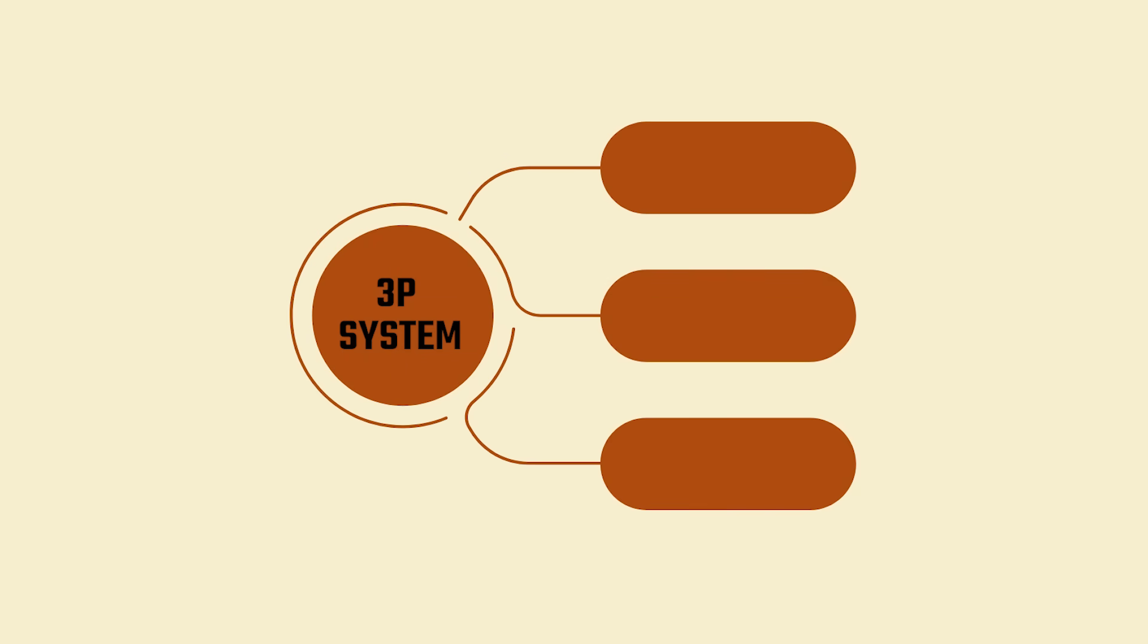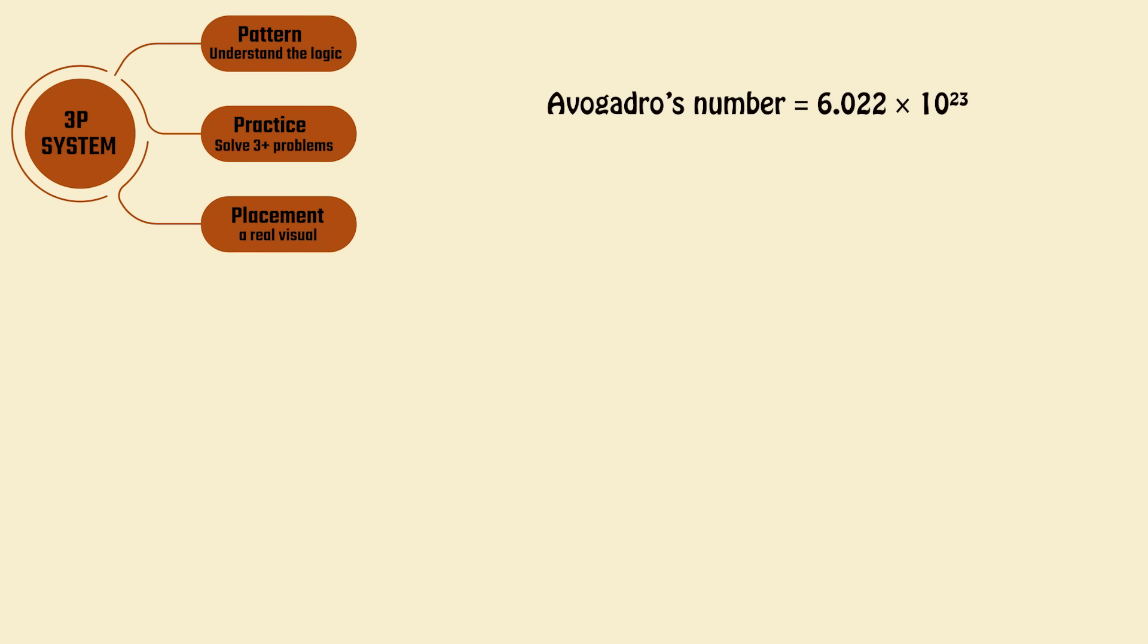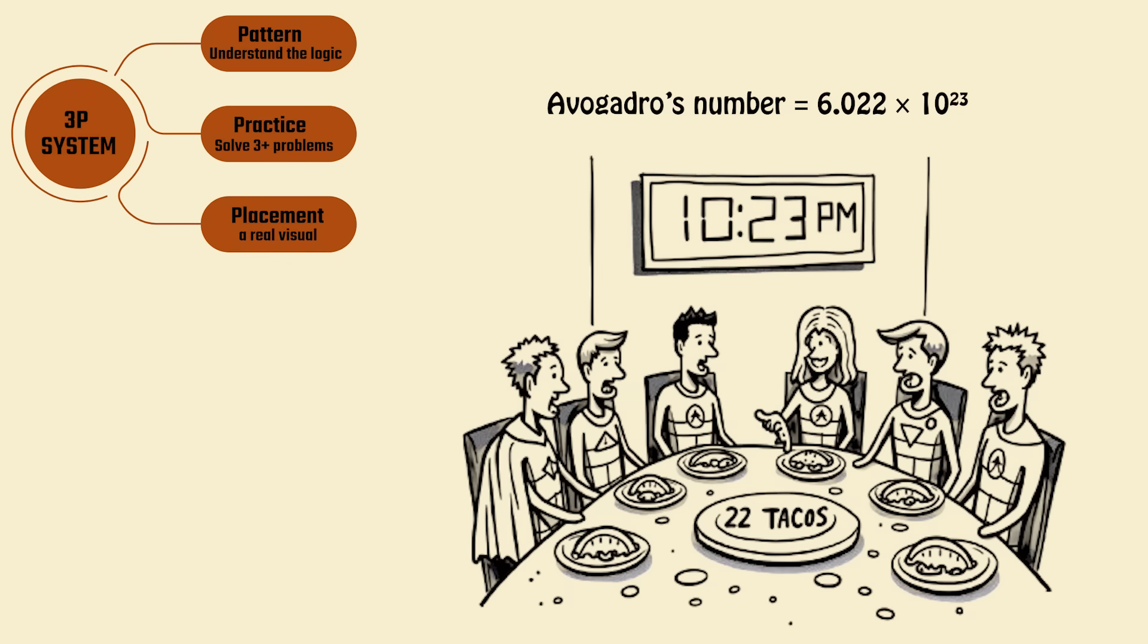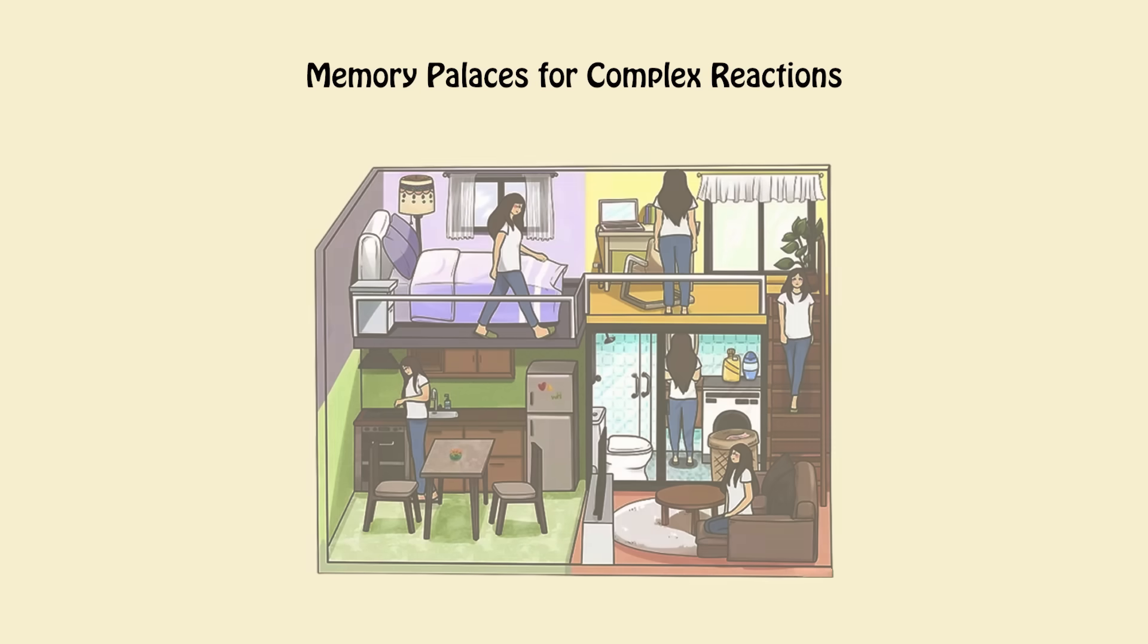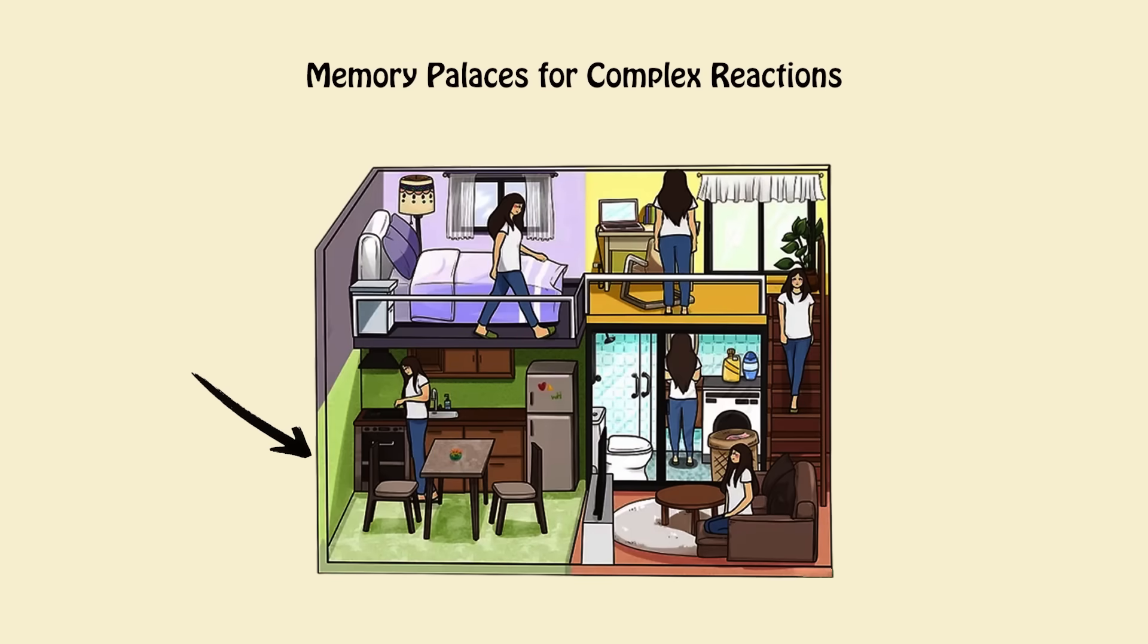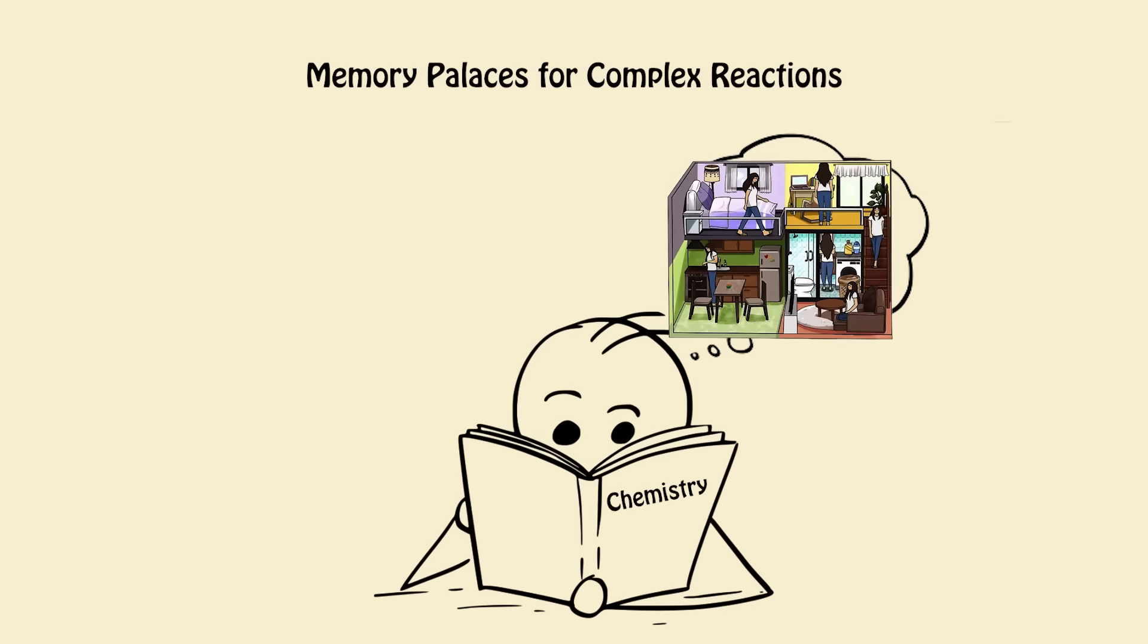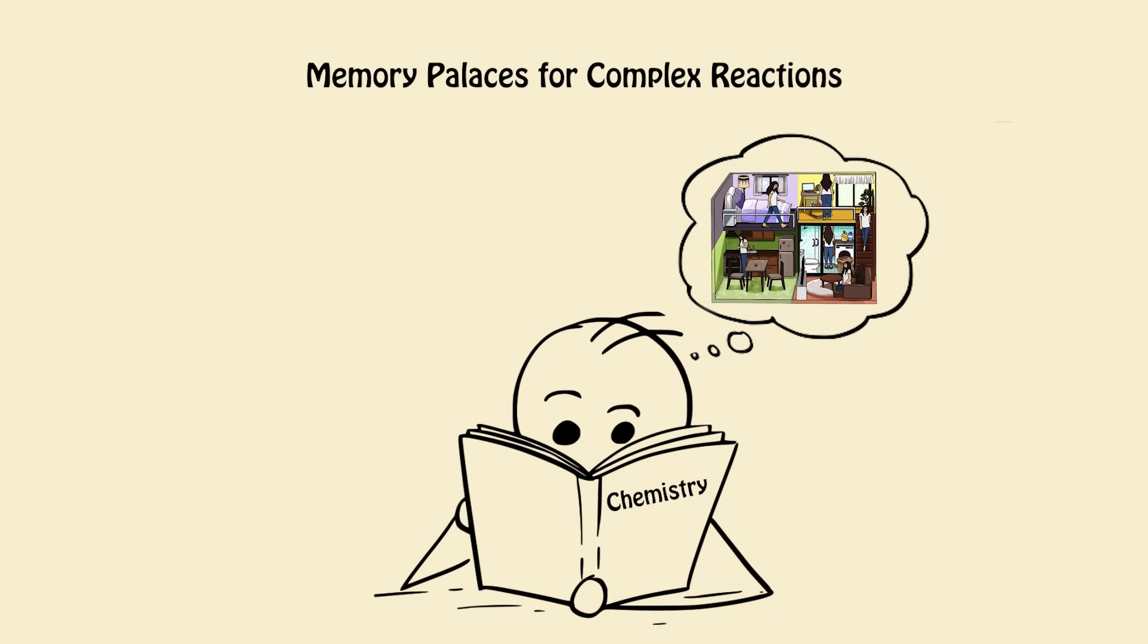Here's the elite level memory method. Use the 3P system for formulas. First pattern: understand the logic. Practice: solve three plus problems with it. Placement: connect it to a real visual, yes, even memes. Example: Avogadro's number equals 6.022 times 10 to the 23rd equals 6 Avengers eating 22 tacos at 10:23 p.m. Silly equals memorable. Use memory palaces for complex reactions. Assign chapters or pathways to locations in your home. Periodic trends in your kitchen, chemical bonds in your bathroom, equilibrium in your backyard. Walk through mentally, retrieve info as you see it. Memory champions use this. Now, so do you.